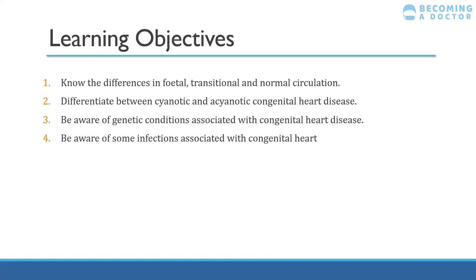So these are just some of the learning objectives. The main things are appreciating what the fetal circulation is like, what happens at birth, and then what goes on to happen in the adult circulation. One of the key things I want to focus on is differentiating between cyanotic and acyanotic heart disease, understanding some genetic conditions and infections associated with congenital heart disease.